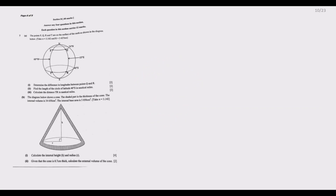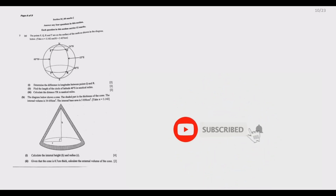Welcome to today's session. We are looking at question seven from the 2021 grade 12 mathematics paper 2. Question seven has two parts: part A on earth geometry, and part B on the volume of a coin. Let us start with question A.